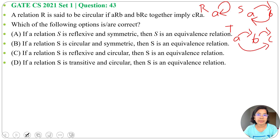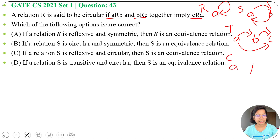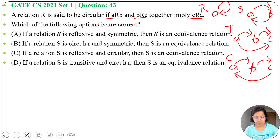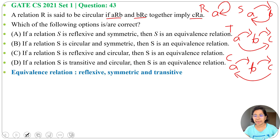So a relation is equivalence if it is reflexive, symmetric, and transitive. Here another property is given — circular. Circular means if A is related to B and B is related to C, then C must be related to A. Now let's check the options.